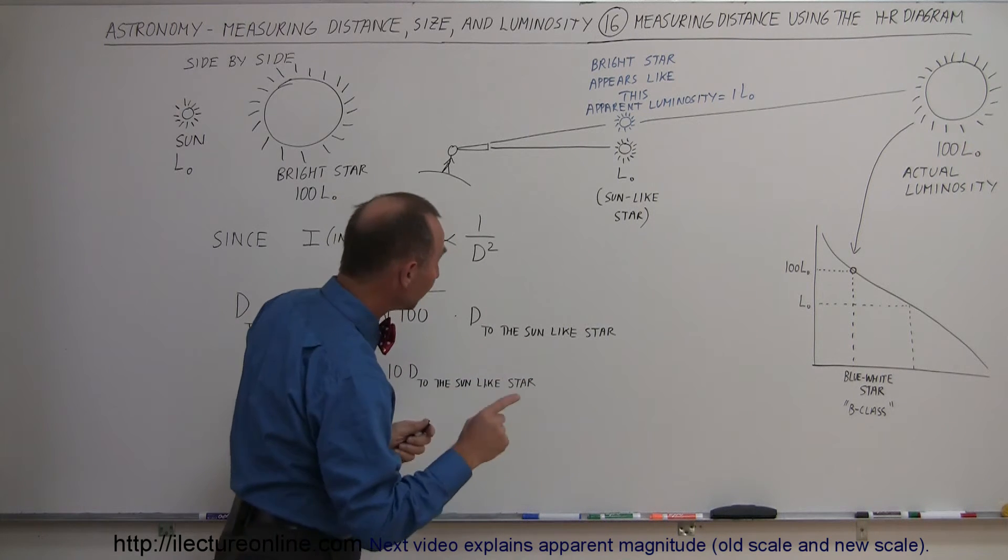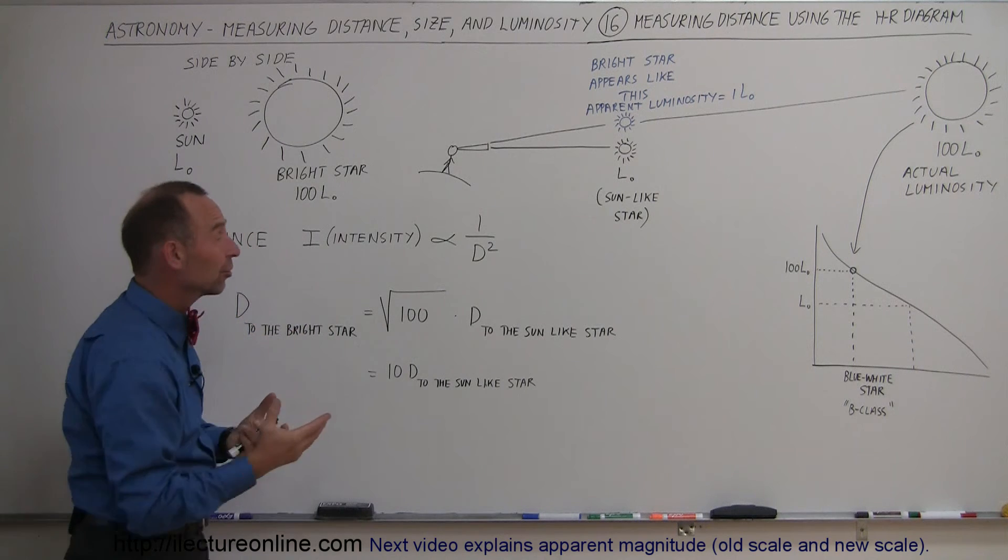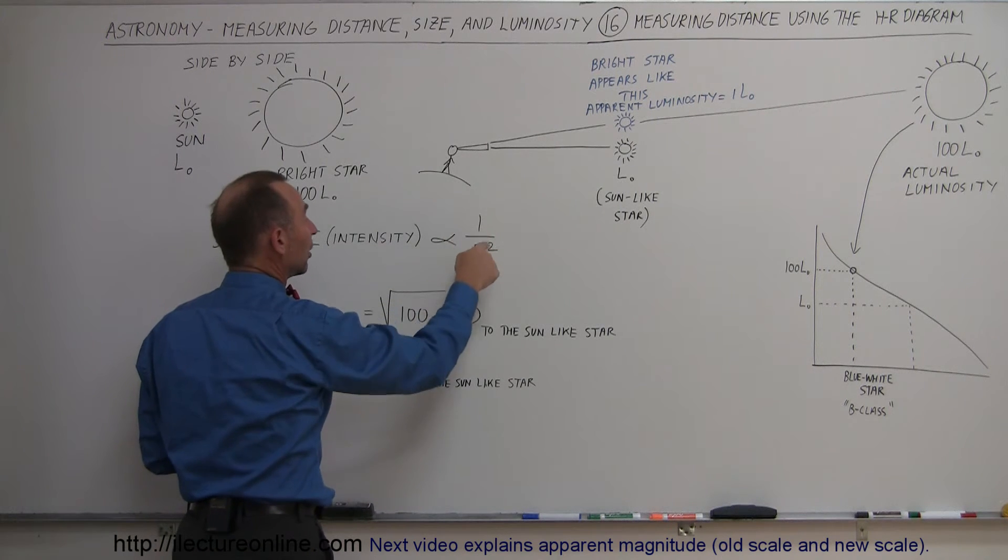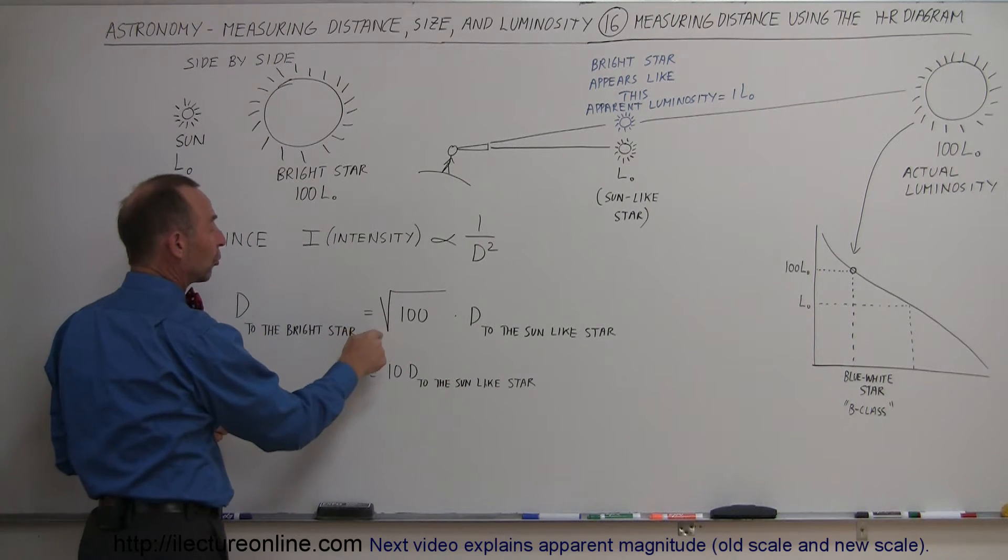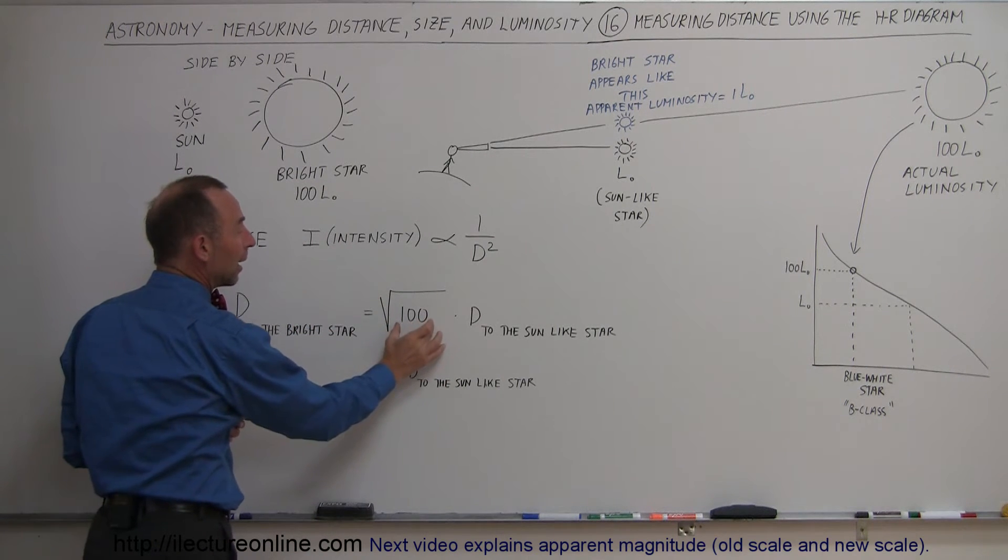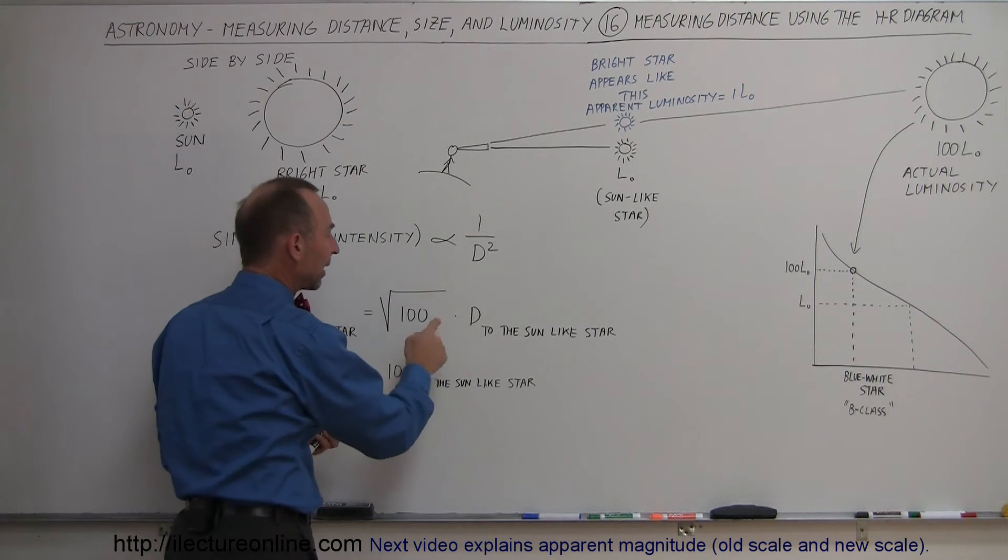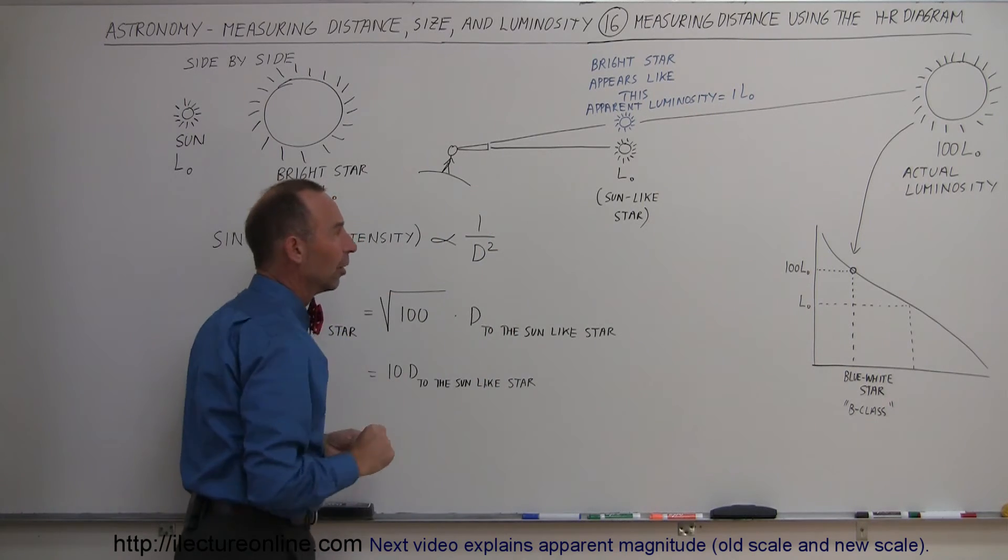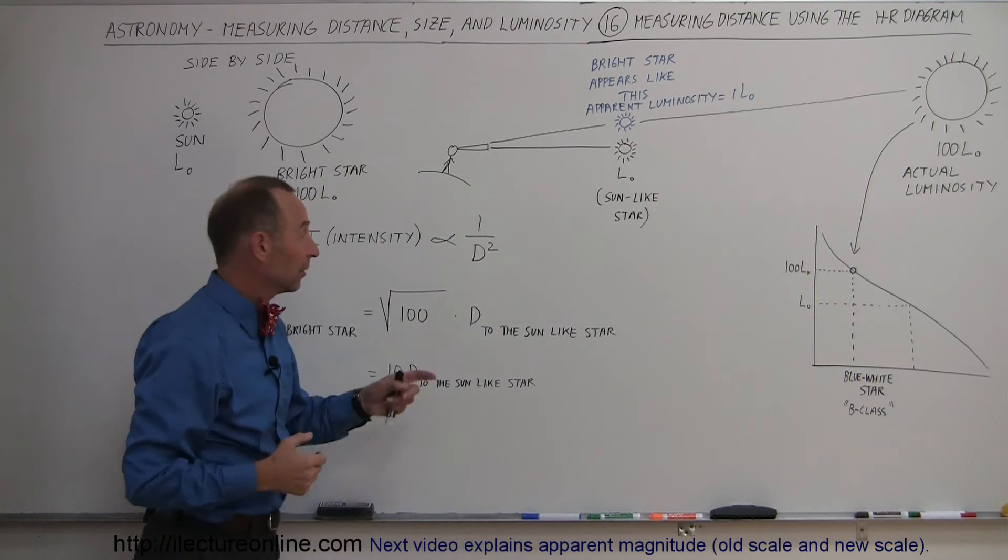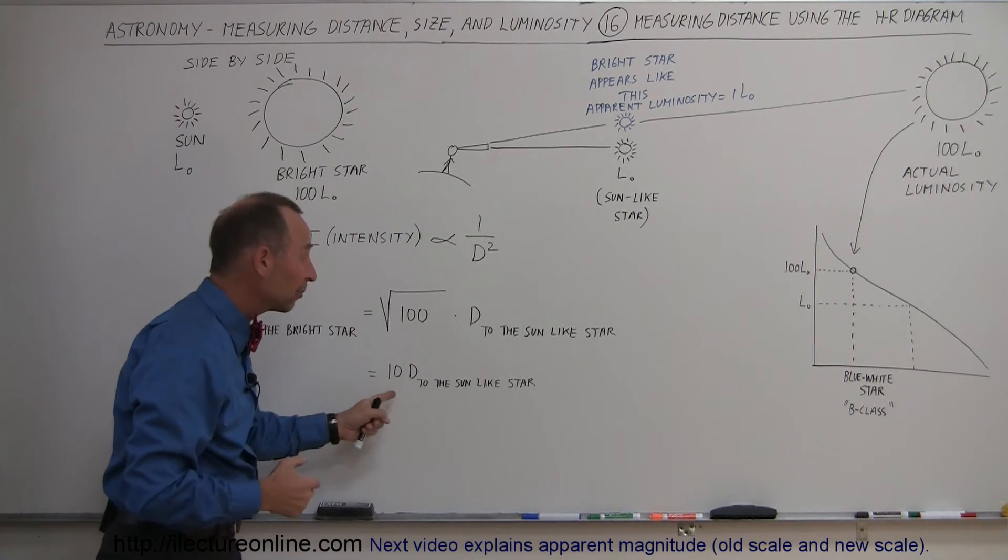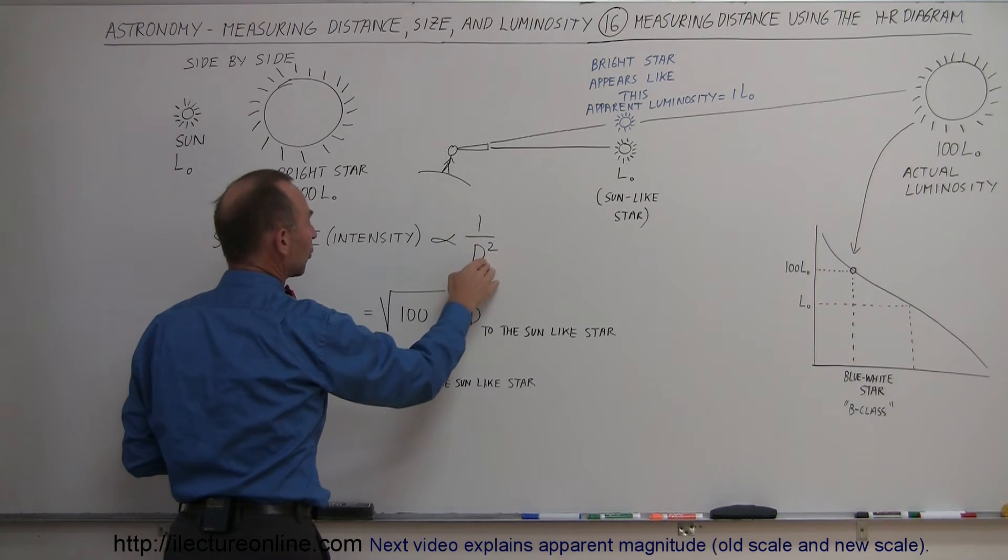How much farther away? Well, since the intensity of a star, which is analogous to the luminosity of a star, is proportional to 1 over the distance squared, we can then say that the distance to the brightest star is equal to the square root of the number how much brighter it is compared to the sun-like star, the square root of that times the distance to the sun-like star. So since this is 100 times brighter, it must therefore be the square root of 100 or 10 times as far away.